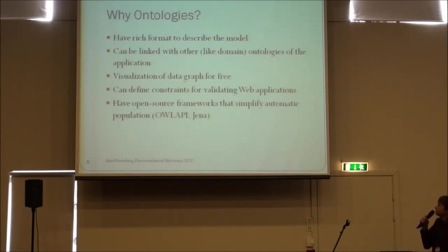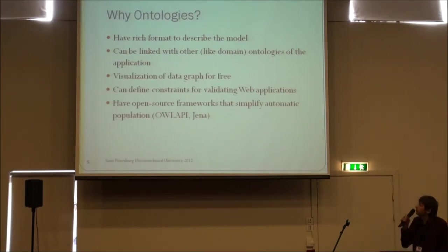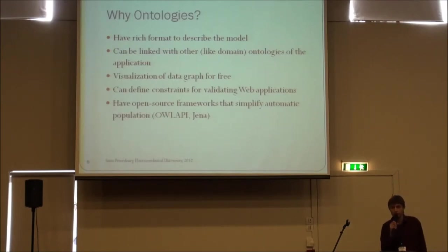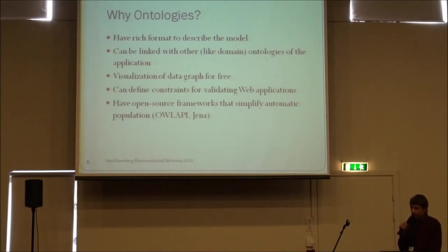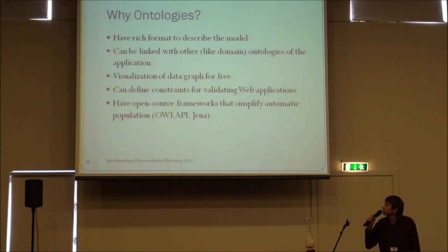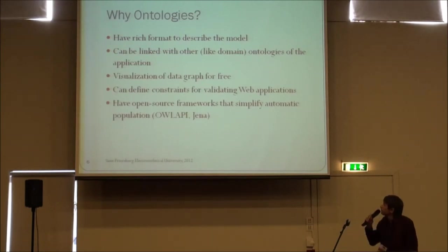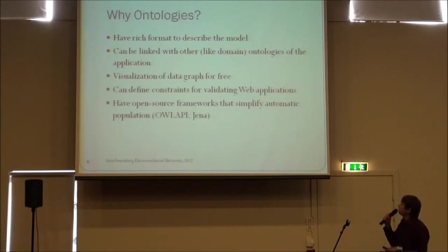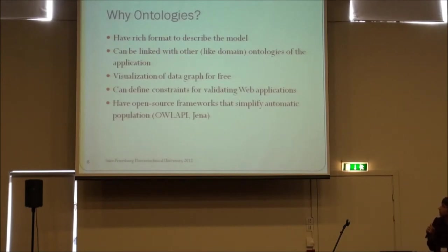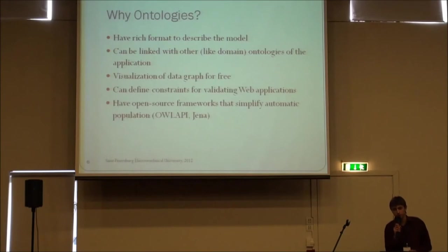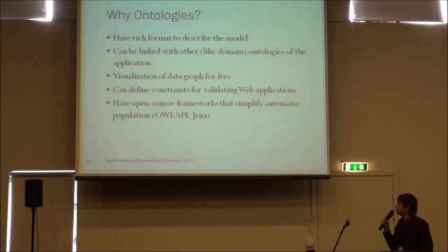Modern applications are too big to build such a model manually, so we need tools to build what I call a web application model. Why are ontologies a good choice? First, they have a rich format — I'm talking about OWL format — that allows us to describe the model and all relations in the application. They can be linked with other ontologies like domain ontologies. You also get visualization of the data graph for free, because free tools exist that do visualization of ontology data graphs. You can define constraints for validating web applications, and we have open source frameworks like OWL API and Jena that simplify implementation.